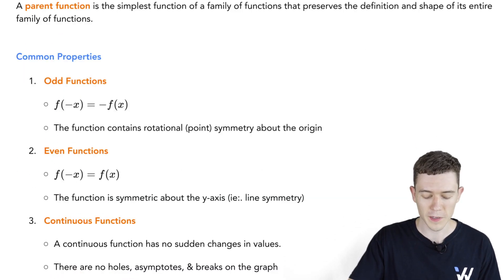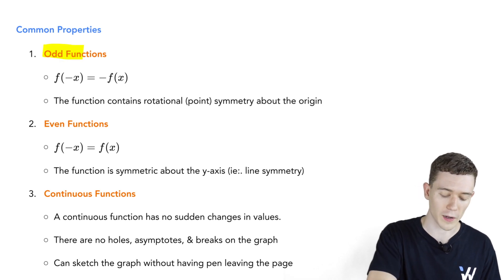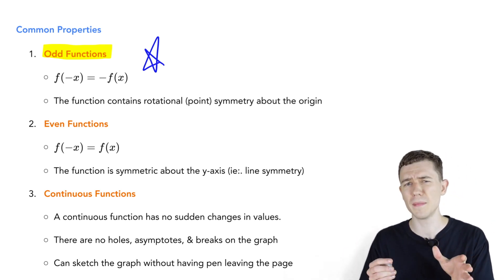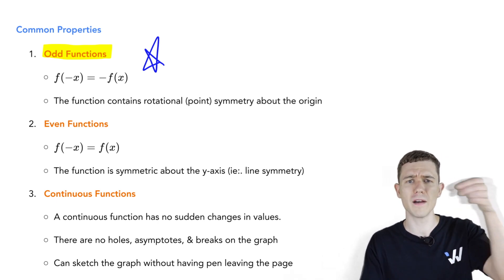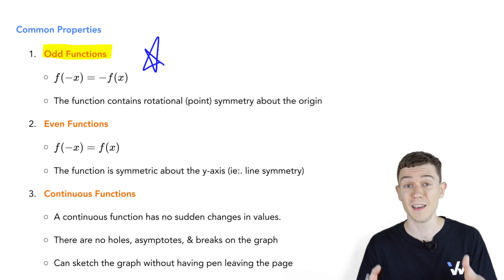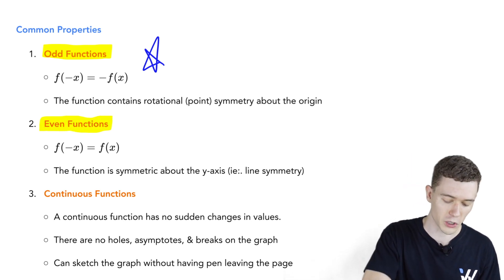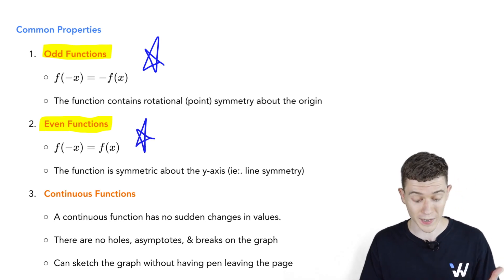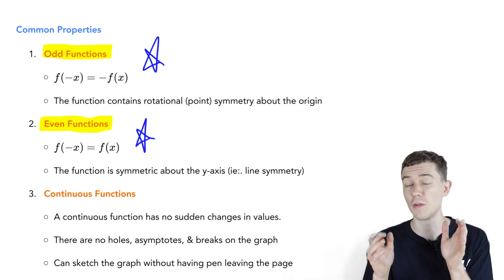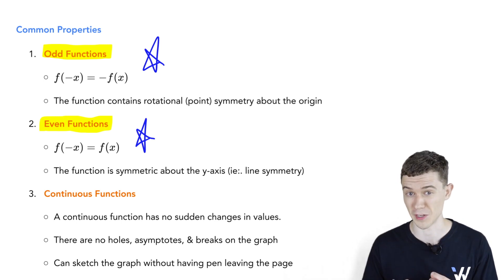Here are some properties we'll be keeping in mind with these functions. We call a function odd if f of negative x equals negative f of x. That means the function's graph is symmetric about the origin — if you rotated it 180 degrees, it would be the exact same picture. We have even functions or even symmetry if f of negative x equals f of x, meaning the function is symmetrical about the y-axis.